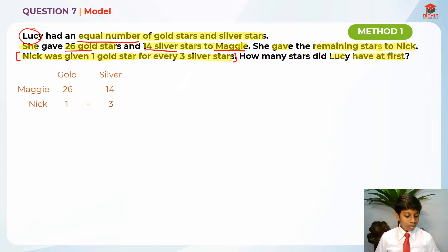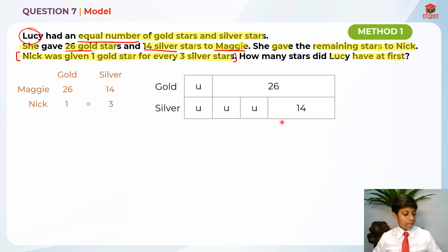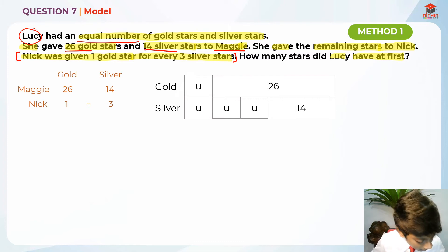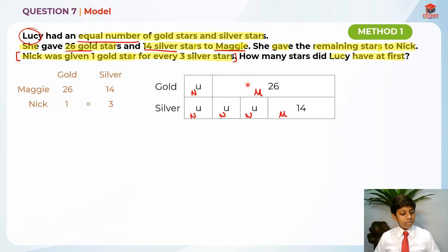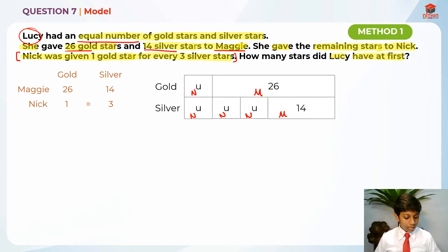Let's draw a model from here. We know that Lucy started with equal parts gold and silver. Nick was given 1 gold star for every 3 silver stars, so in the model we label Nick's portions as N, N, N, N, N — representing 1 unit gold and 3 units silver for Nick. The 26 is Maggie's gold (labelled M) and 14 is Maggie's silver (also M). Maggie has 26 gold stars and 14 silver stars.